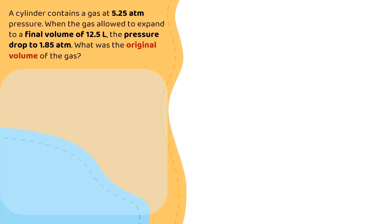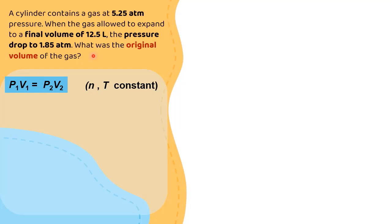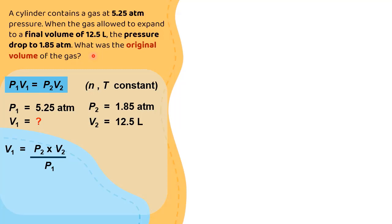Let's check comprehension on Boyle's law. A cylinder contains a gas at 5.25 atm pressure. When the gas is allowed to expand to a final volume of 12.5 liters, the pressure drops to 1.85 atm. What was the original volume of the gas? Applying Boyle's law — P1V1 = P2V2, where amount of gas and temperature are kept constant — we have P1 = 5.25 atm, V2 = 12.5 liters, and P2 = 1.85 atm. Rearranging to find V1 by multiplying P2V2 and dividing by P1, we get V1 = 4.40 liters.